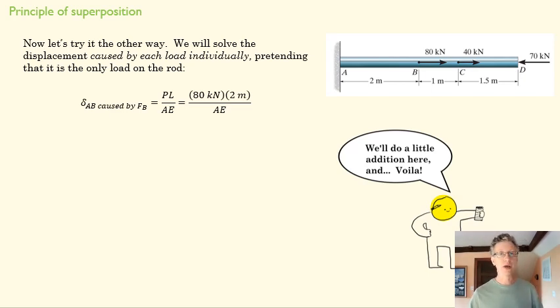So we're going to start with the 80 kilonewton load here. We're going to find the change in distance created just by that load in AB. We're going to treat this rod as if this was the only force acting upon it. And if that were the case, then there's no internal resultant force out here. If this wasn't here and I created a section here, I'd find that my internal result load was zero. So I can ignore this for the time being and say, okay, all I have to deal with is this section between A and B. And that's why you see that two meters there.